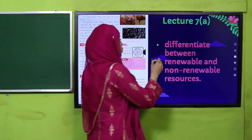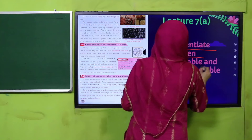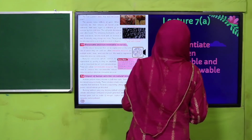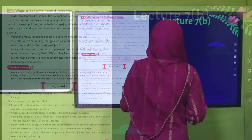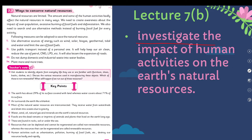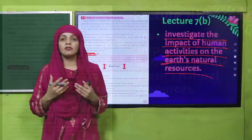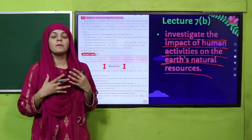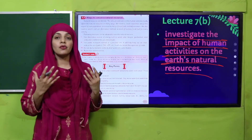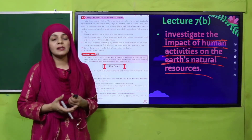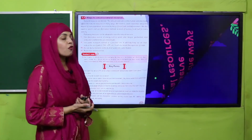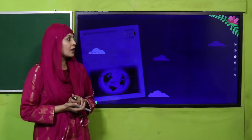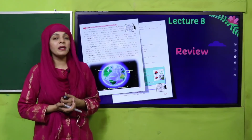In lecture number seven A, students will differentiate between renewable and non-renewable resources. In lecture number seven B, students will be able to investigate the impact of human activities on the earth's natural resources. Kis tariqa se human activities ka impact hai natural resources pe — hum lecture number seven B mein discuss kareinge.